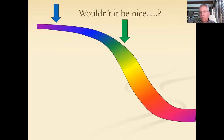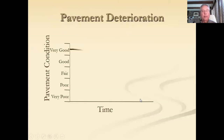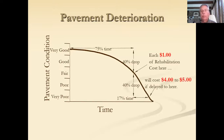Wouldn't it be nice if all your roads were in good shape and existed up here on the curve before they start dropping off into cases where more heavy-duty reconstruction processes are going to be needed. Unfortunately, that's usually not the case. The numbers speak for themselves — each dollar of pavement maintenance cost up here is going to cost four to five dollars if we get down here to extensive rehabilitation or reconstruction.